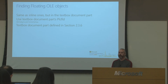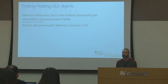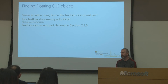Finding floating OLE objects is basically the same as inline ones, but it's going to be in the text box document part. The FIB points to the different document parts, and you use that to find the text box document part, find the PLC FLD within it, and look for fields that are OLE objects within that text box document part. The text box document part is defined in section 2.3.6. Any document part containing text box anchors can contain floating OLE objects, and any document part can contain inline OLE objects.